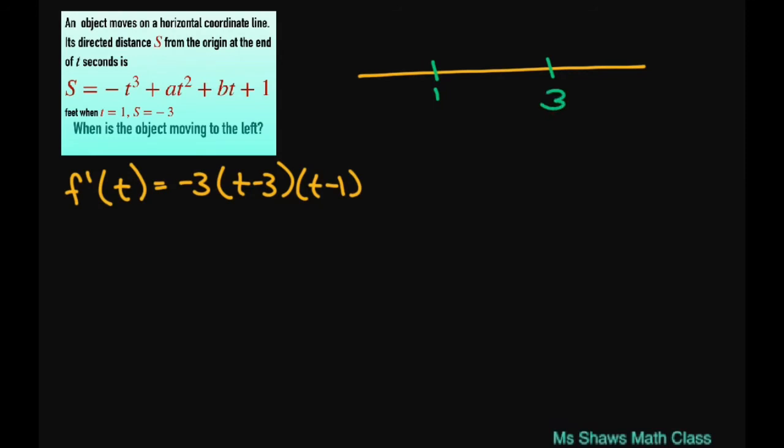If I substitute in 0, I get negative, negative, and negative, so this part is negative. In this interval, let's substitute in 2. This will be negative, this will be negative, but this will be positive, so we have positive here. And if I substitute in 4, I get negative, positive, positive, which means negative.